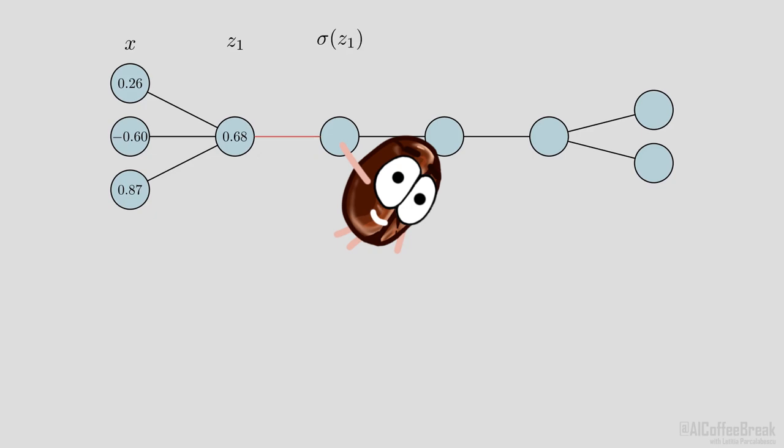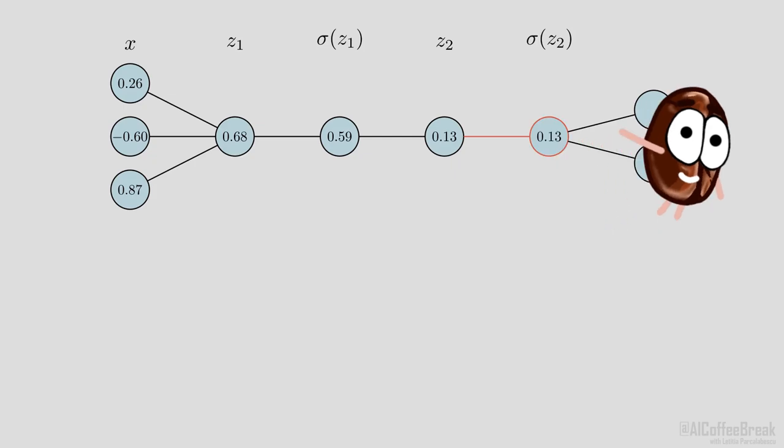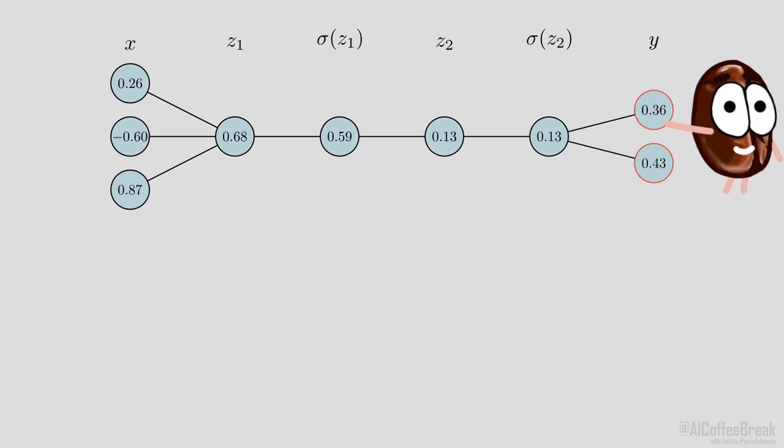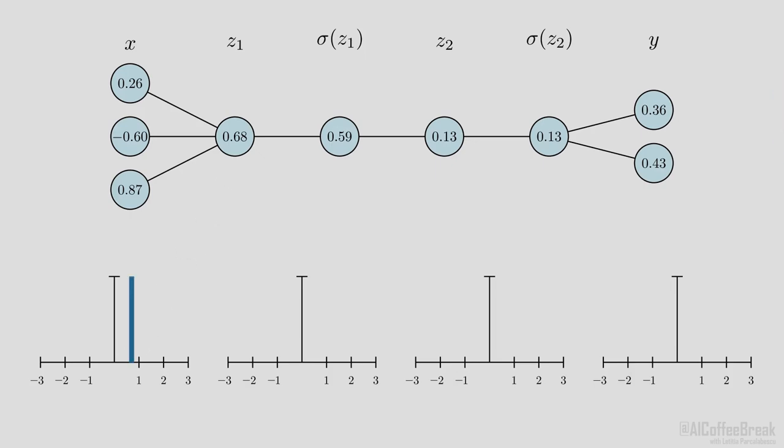Next, an activation function sigma is applied to each of these neurons. This gives us the so-called post-activations. In our case, we choose a tanh activation function. This is repeated for the other hidden layers to finally produce the output Y.